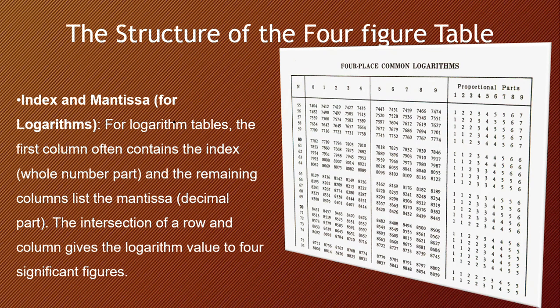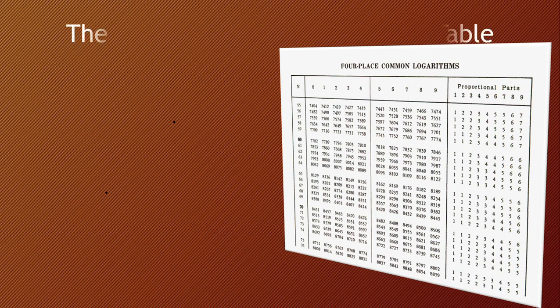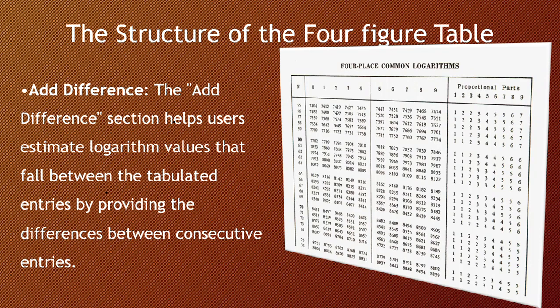We'll be looking at another item - that is index and mantissa. So, for example, in logarithm tables where we have the N, that is where we have the index, and mantissa refers to the decimal part of the logarithm. So the other parts are called the mantissa. The remaining columns list the mantissa part. The intersection of the row and column gives the logarithm value to four significant figures.